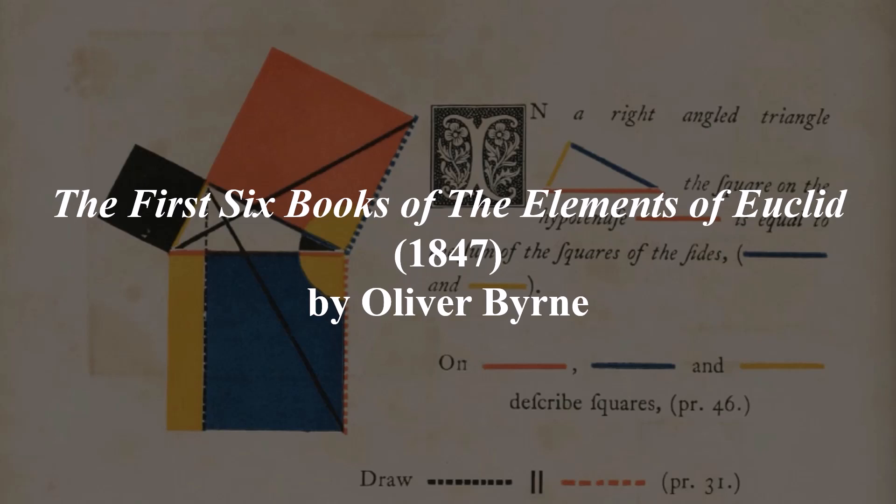This definition encompasses all traditional works of art, but also some items that many people would not necessarily consider artwork, like this mathematics textbook. In fact, in this video, I'm going to try and convince you that this book, an 1847 edition of Euclid's Elements created by Oliver Byrne, is not one work of art, but two.